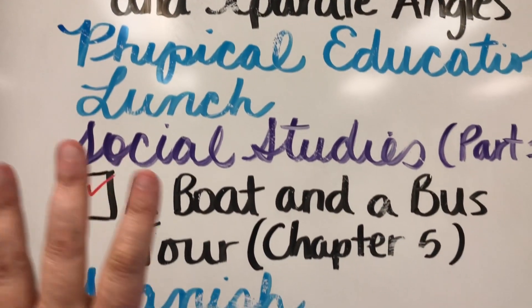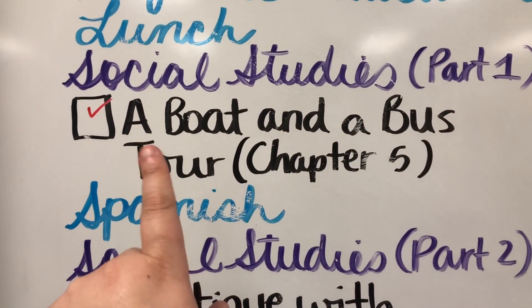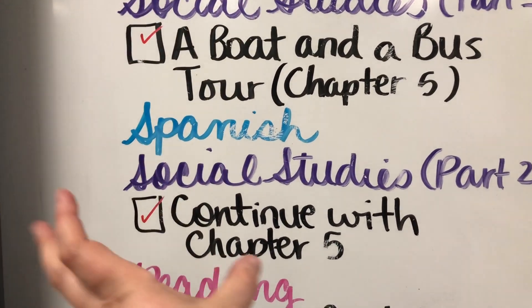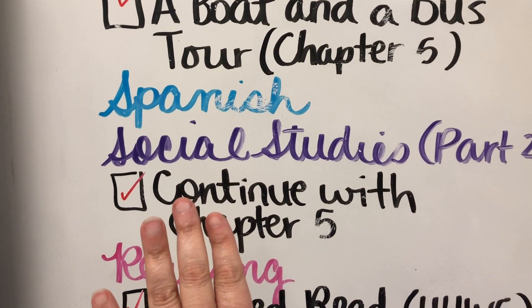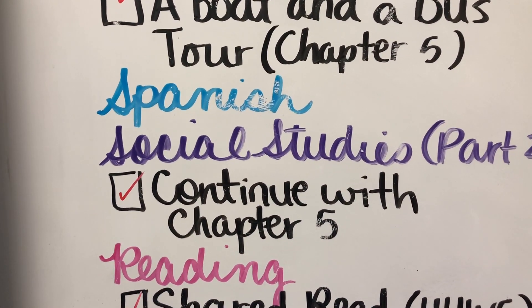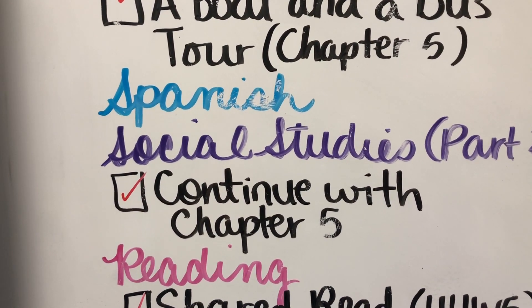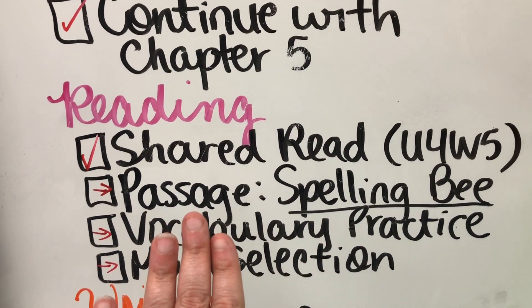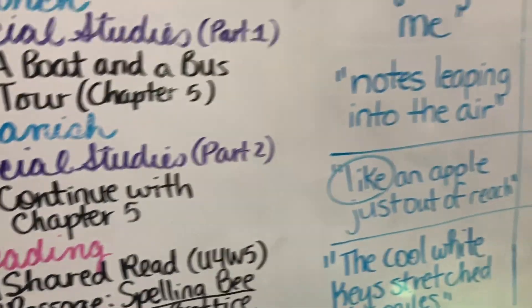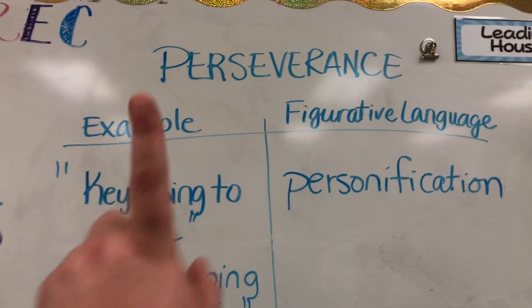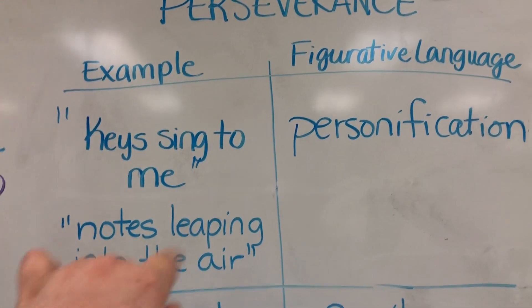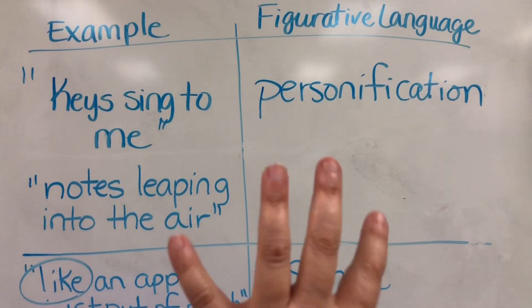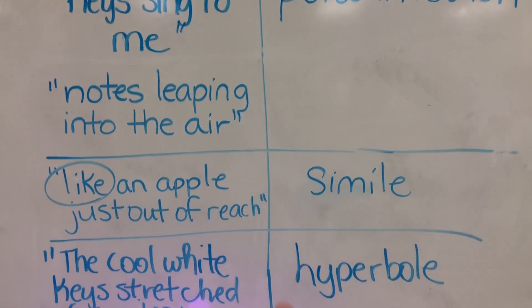Then we had a little break. In social studies, we continued reading chapter five and actually finished it. We had to split our social studies on Fridays because we have Spanish in between, but we ended up reading the entire chapter. Students will get a chance next week to finish the foldable and then take a test on this chapter. In reading, we did our shared read and talked extensively about these poems — really dissecting them. Perseverance was the theme. I was giving students examples from the poem and asking them what figurative language it was. We found personification, a simile, and hyperbole.